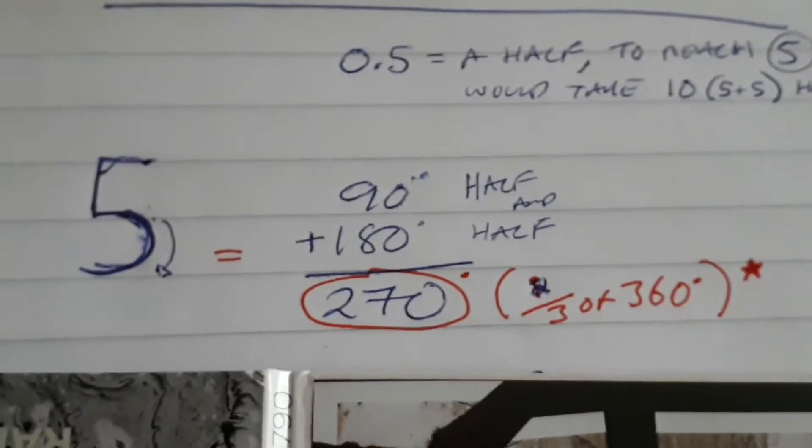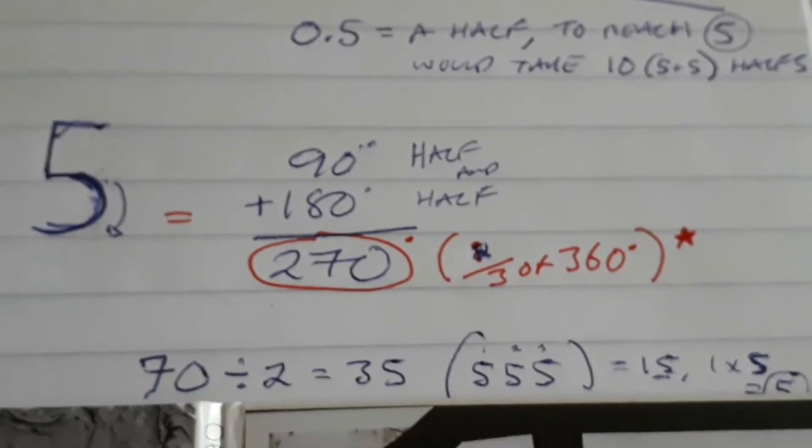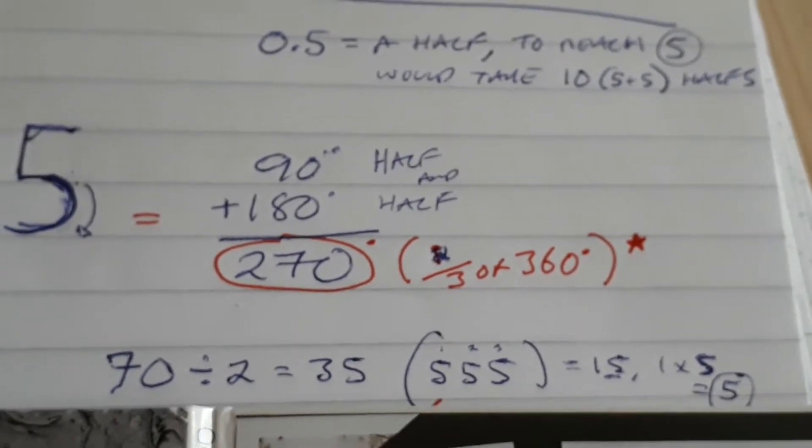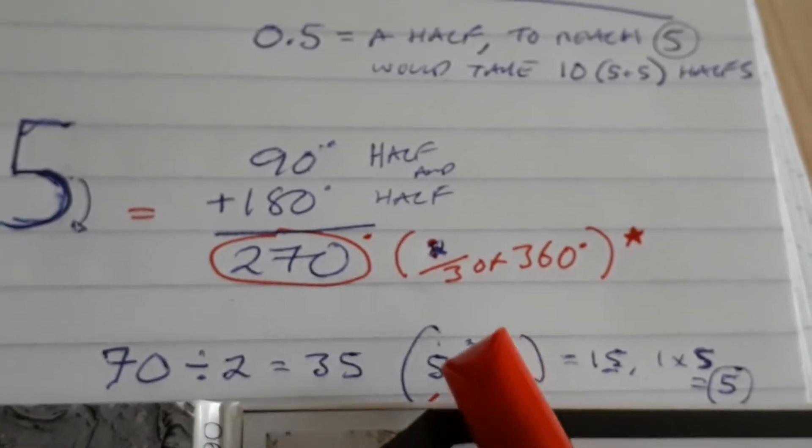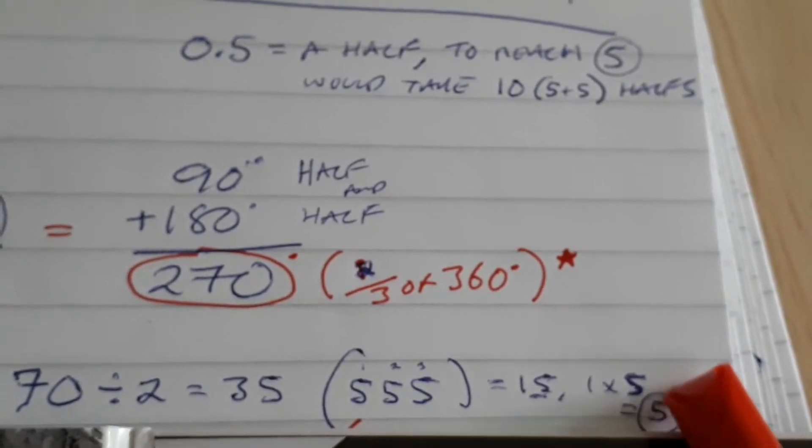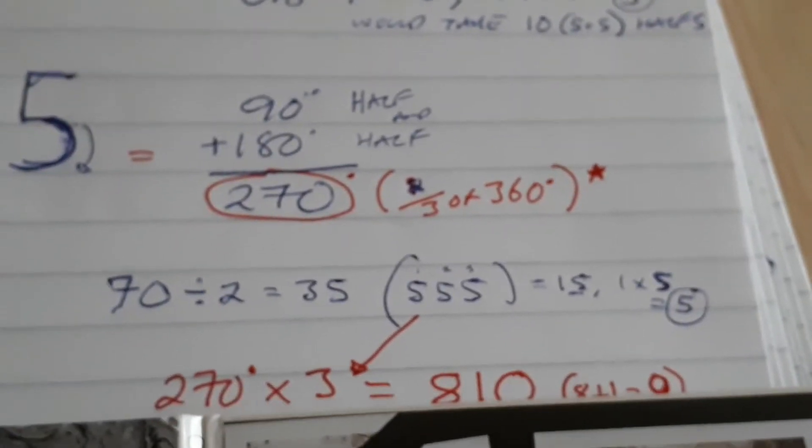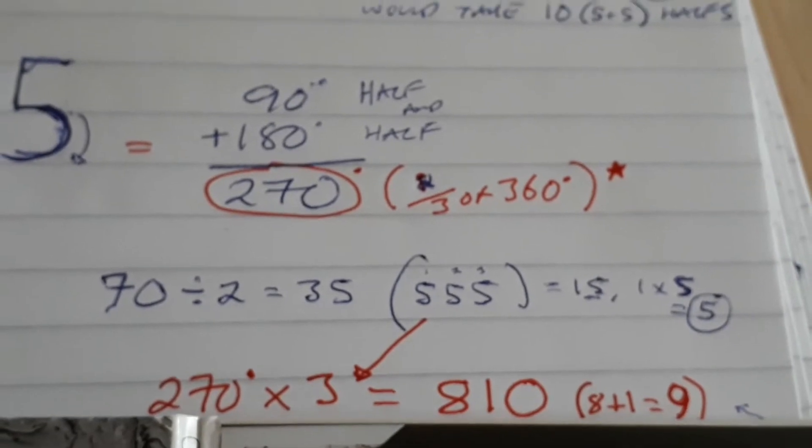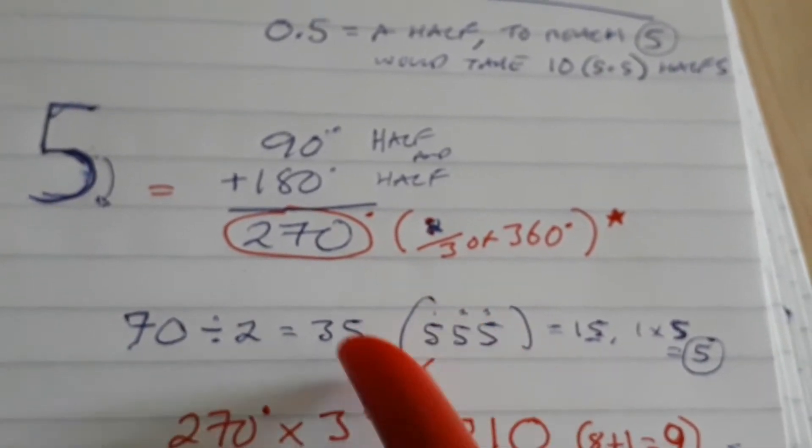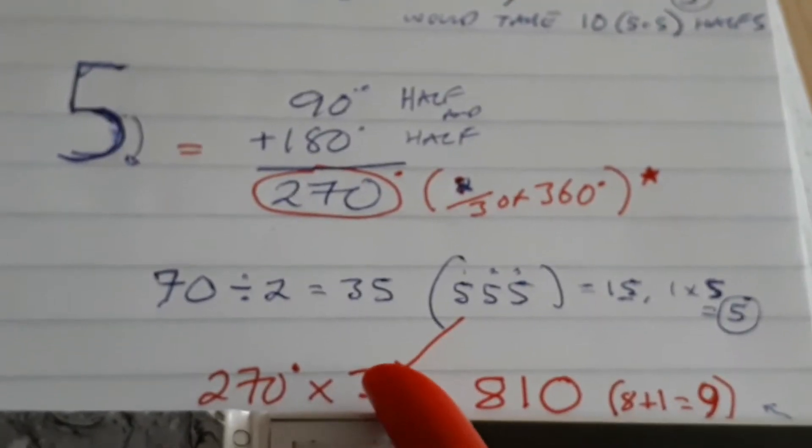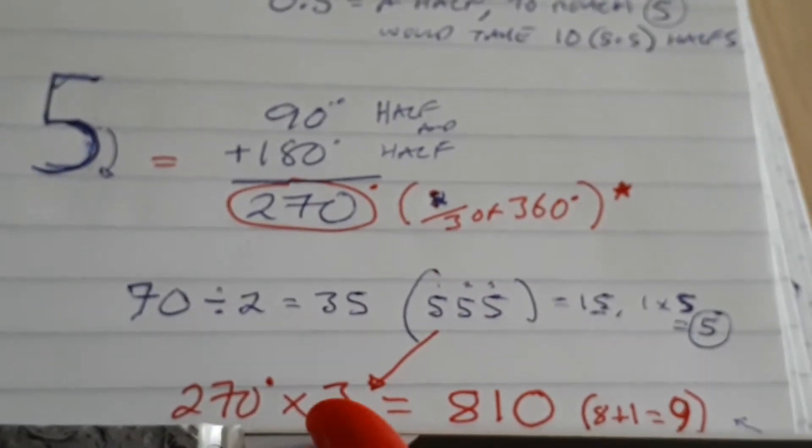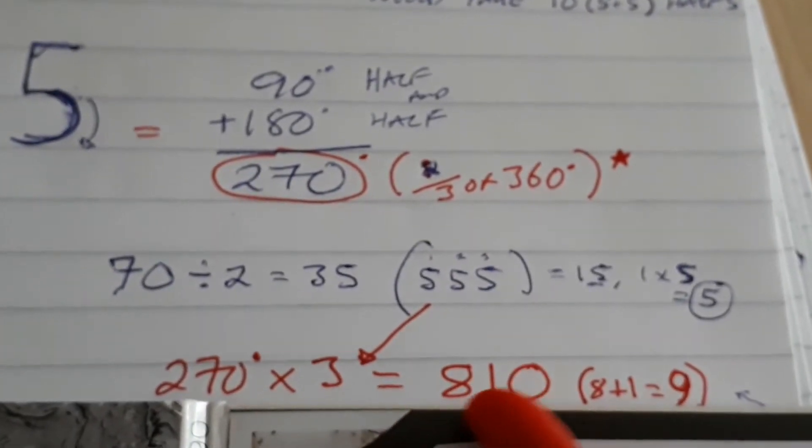I'm going to stick with those numbers then. 270. 70 divided by 2: 35, 3 5, 5 5 5, 3 times 5 being 15, 1 5. 270 times 3, so we've now got 3 5 on this one. It's following on there. We've created three more fives.